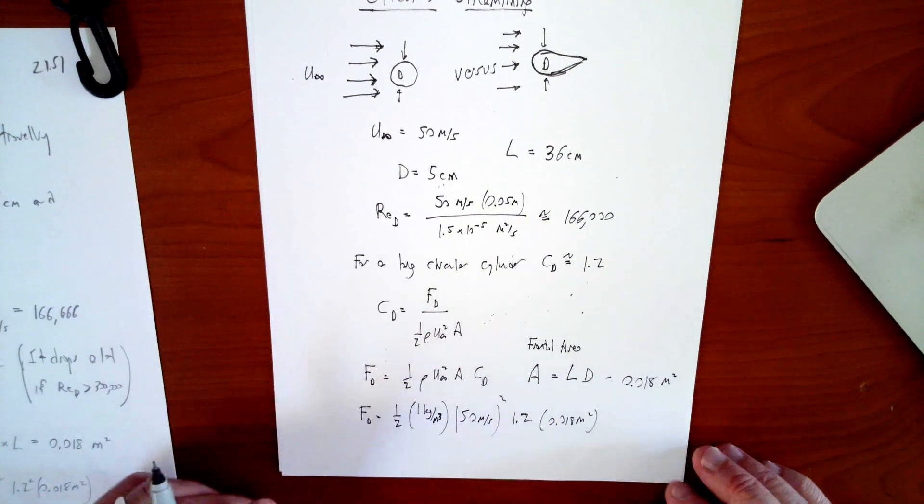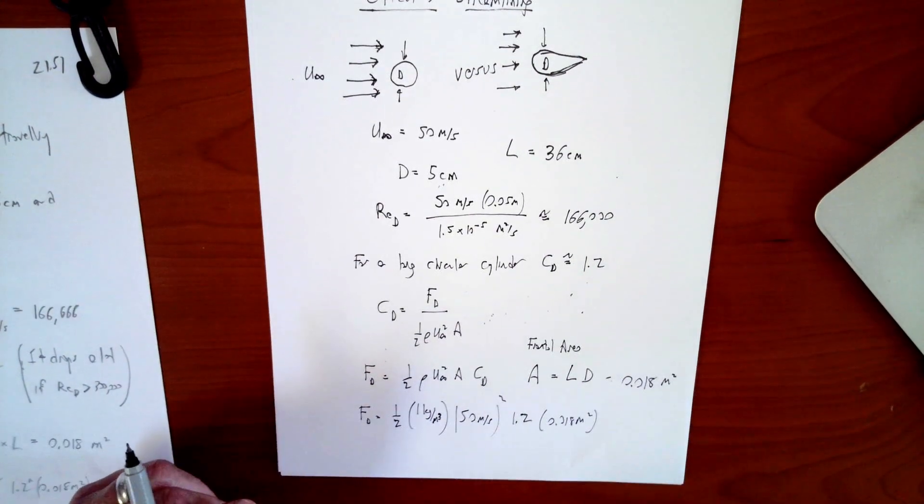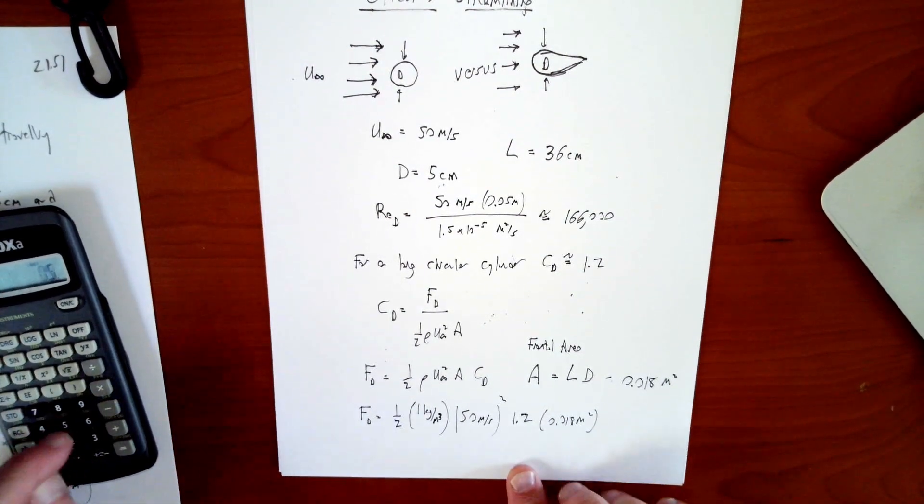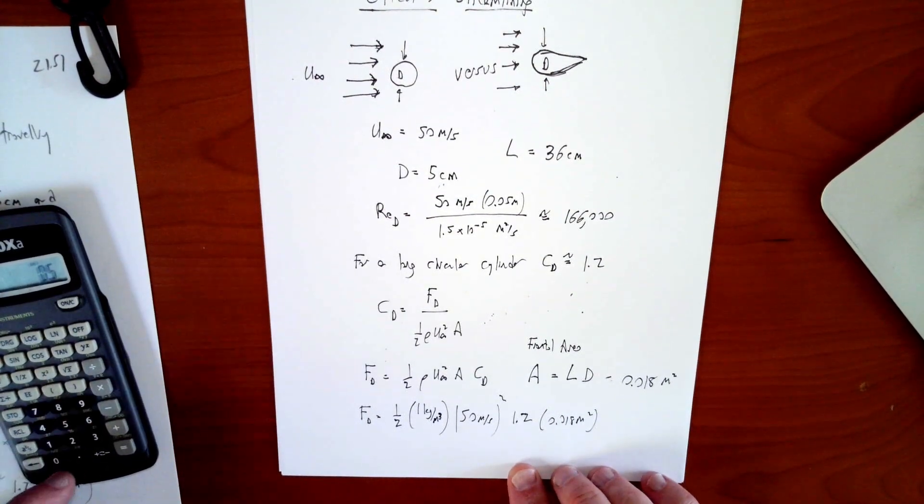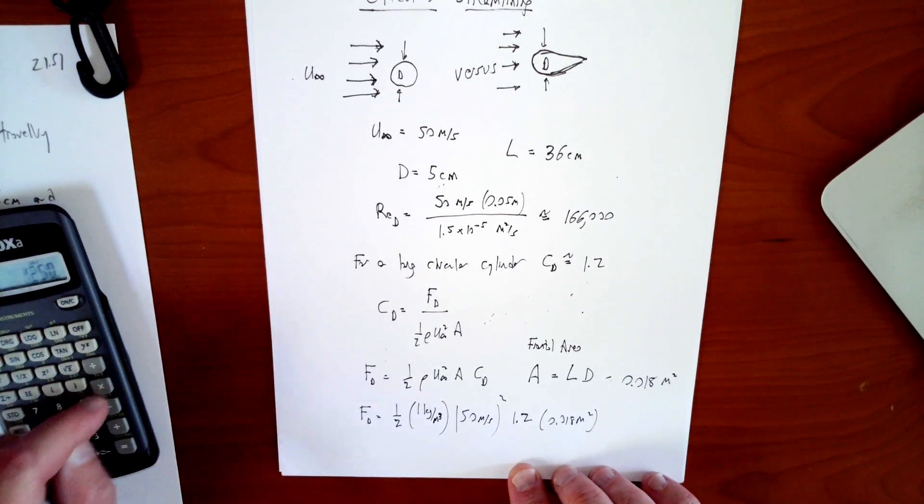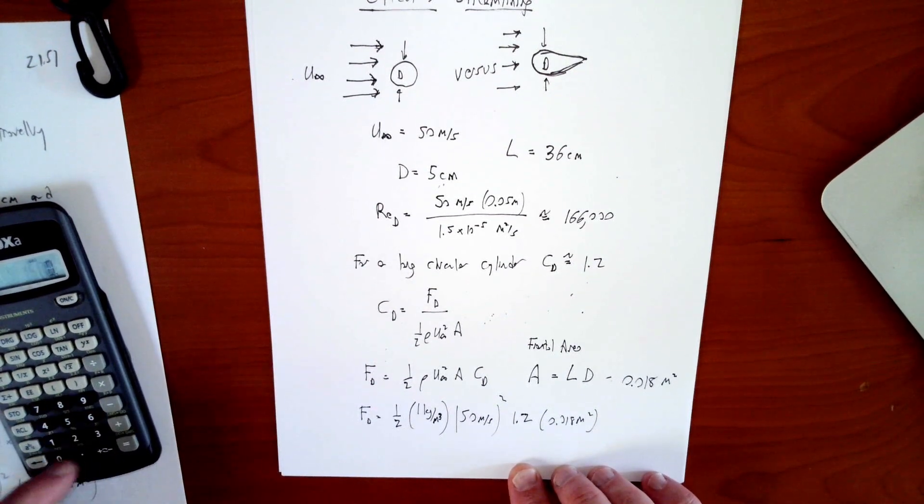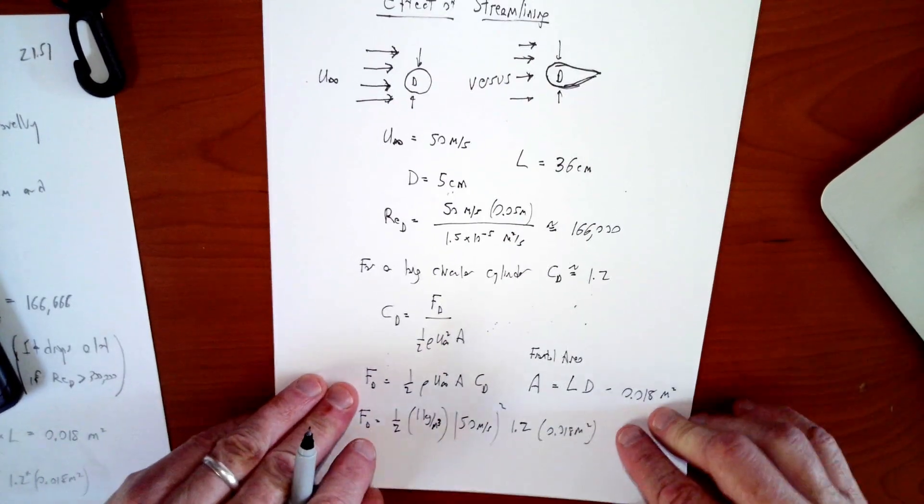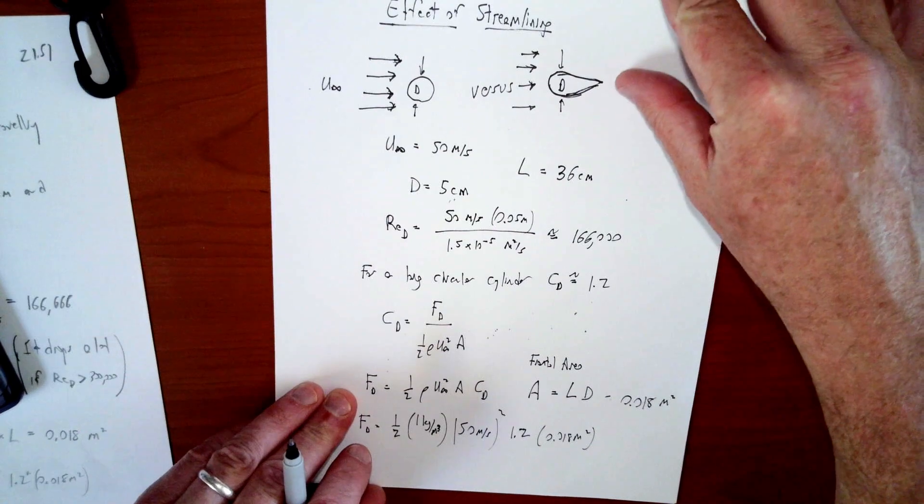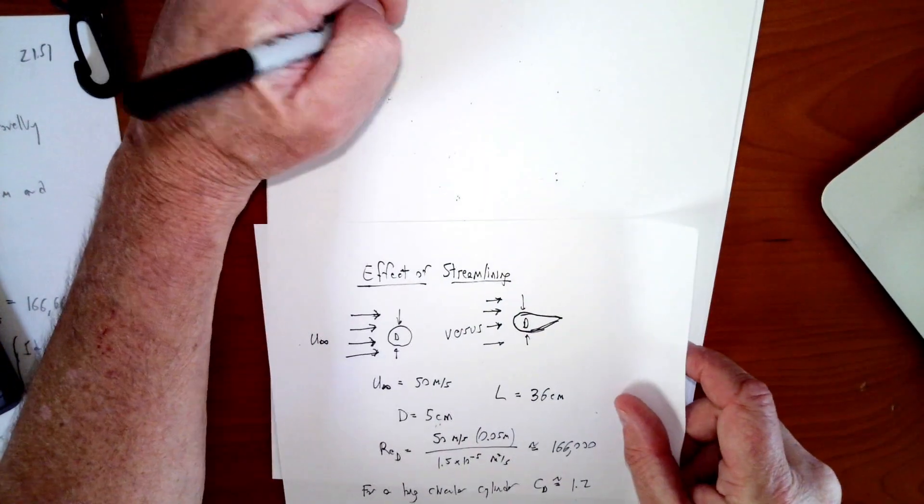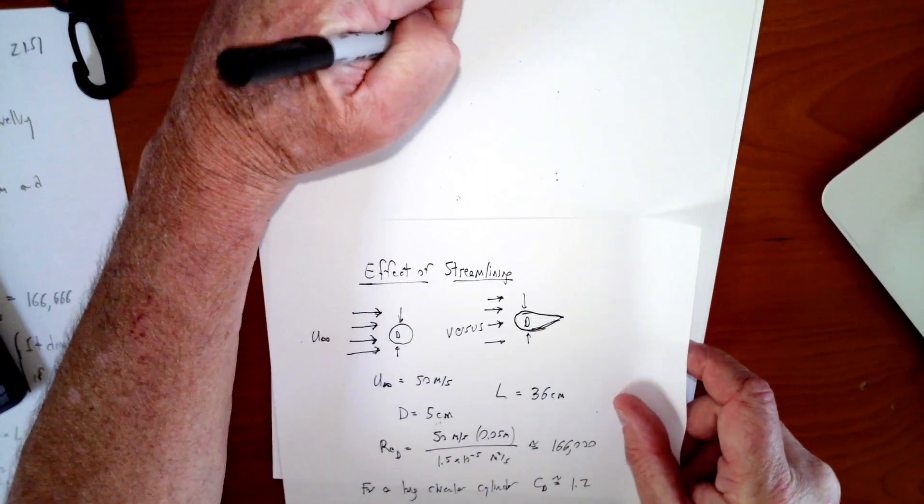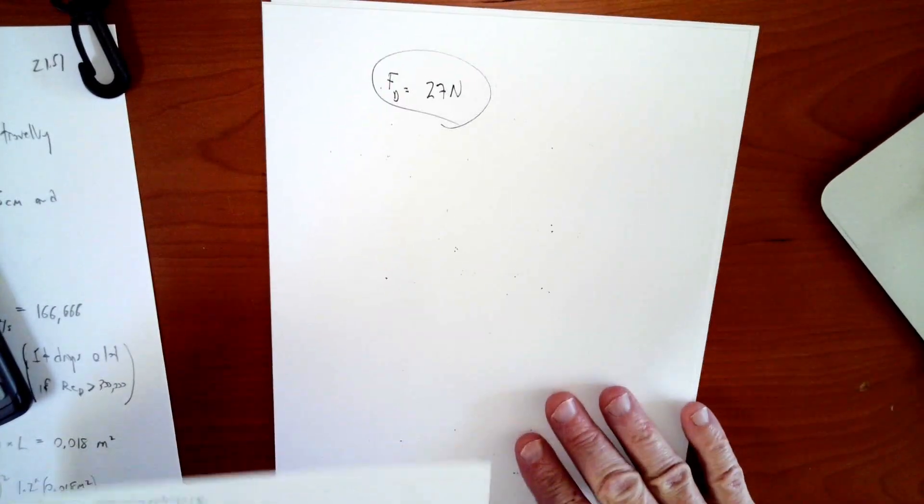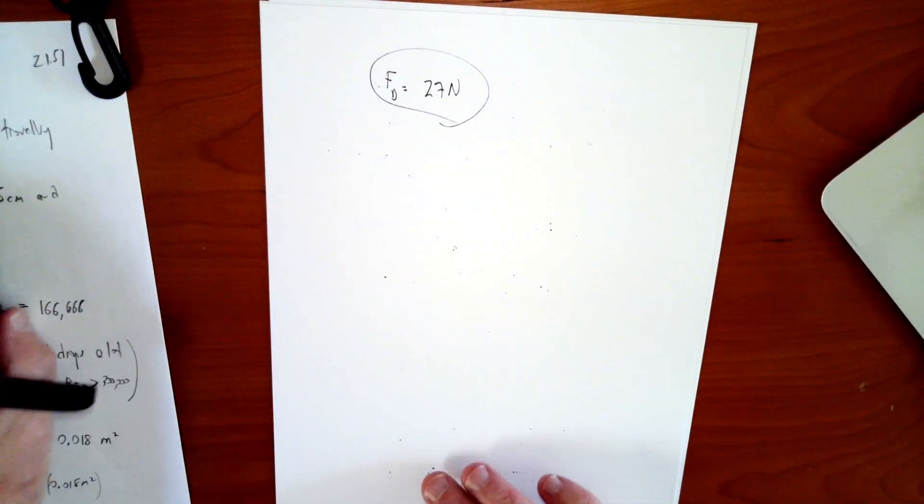1.5 times 1 times 50 squared times 1.2 times 0.018, and I get 27. So the drag force is about 27 newtons for that cylinder. So if it's a cylindrical strut, the drag force is about 27 newtons.